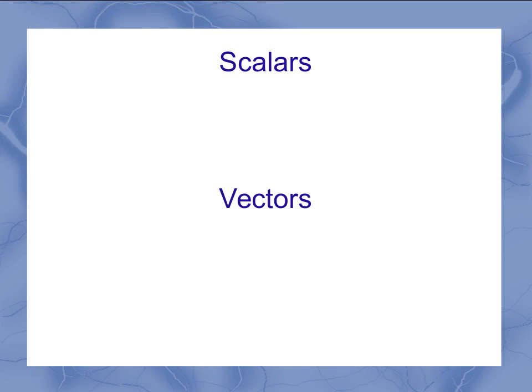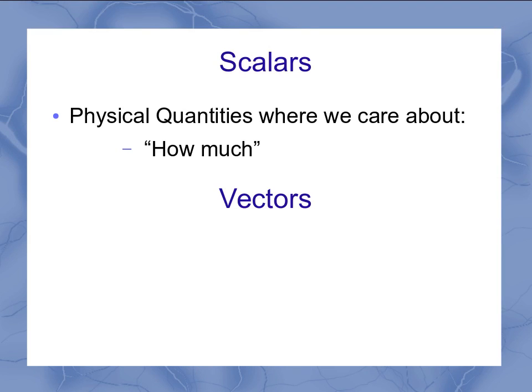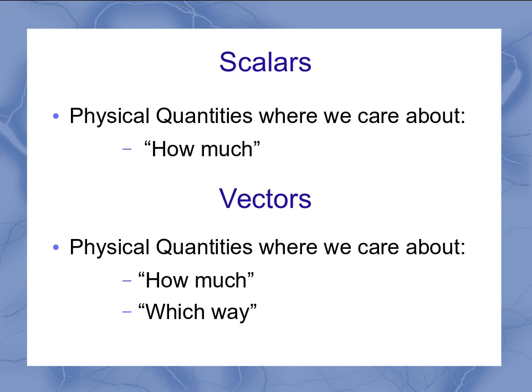If I look at these two quantities, they're both the description of a physical quantity, but some physical quantities, what we care about is how much of that quantity do I have. Other ones, what I care about is how much and which way. So the big difference here between scalars and vectors is what do I care about? Is it just how much or is it how much and which way?